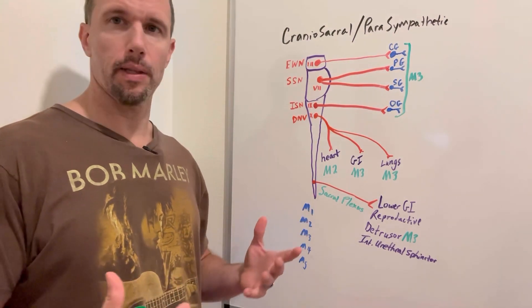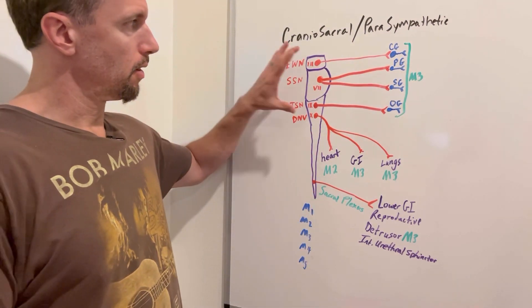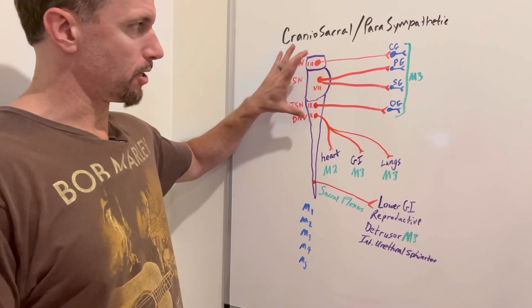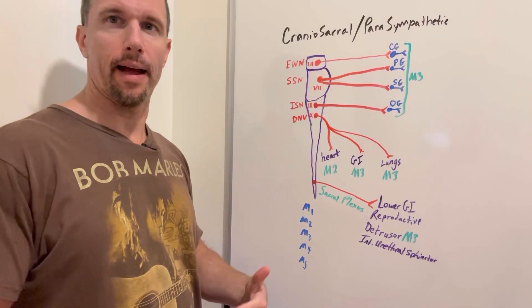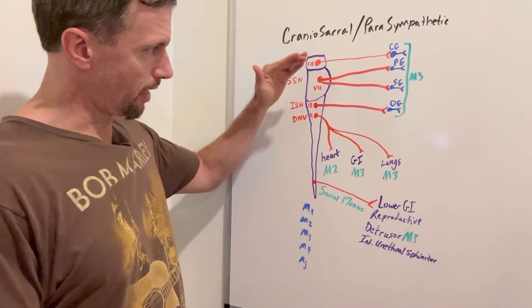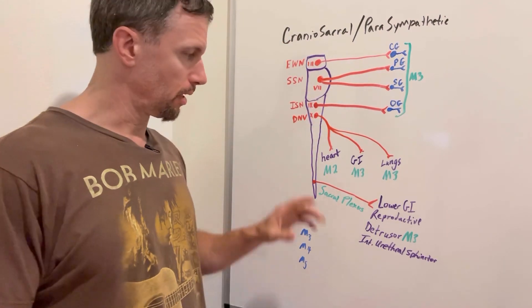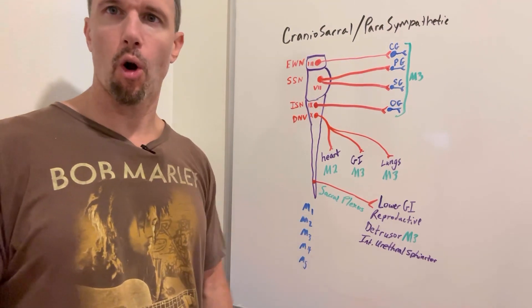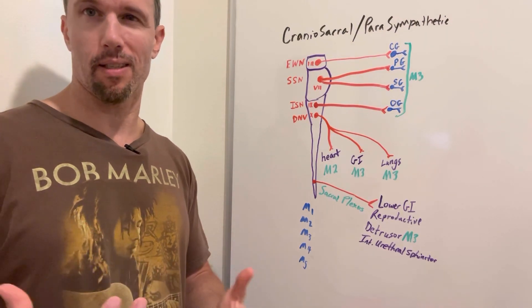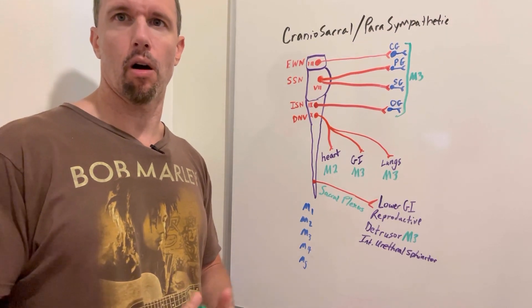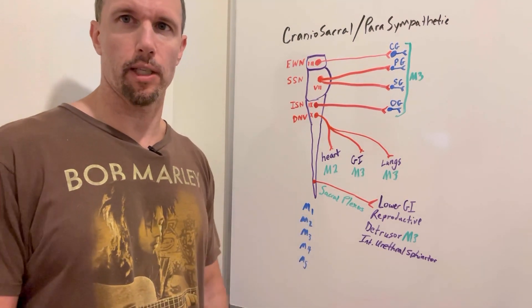The parasympathetic nervous system is also called the craniosacral nervous system because in the brainstem, four cranial nerves have parasympathetic innervation. Then you skip down to the terminal end of the spinal cord and the sacral portion, where a few more cholinergic nerve fibers come out. Cholinergic means it releases acetylcholine, and that's what all parasympathetic innervation does.